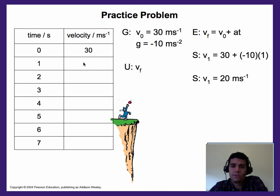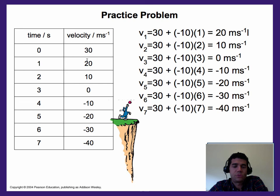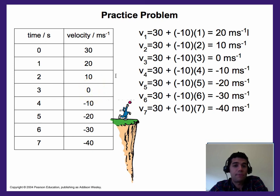We can plug in over and over again and see a clear pattern: velocity goes from 30 down to 20, 10, 0, negative 10, negative 20, negative 30. What this means is the ball changed direction — at 0 it reached the top, which took about 3 seconds. That's around the time it began to change direction and pick up speed going down.